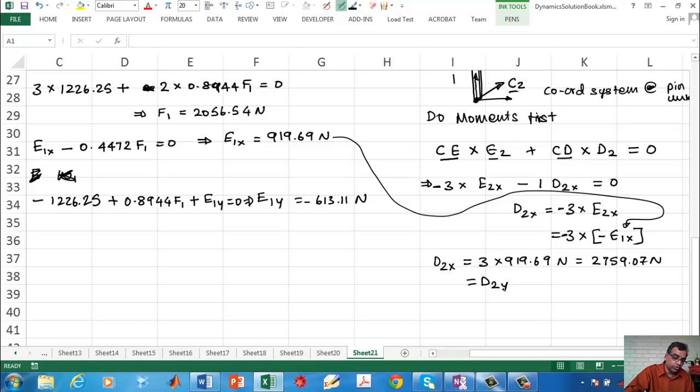D2 equals square root of D2x squared plus D2y squared, which turns out to be 1.414 times 2759.07, which is 3901.32 newtons.